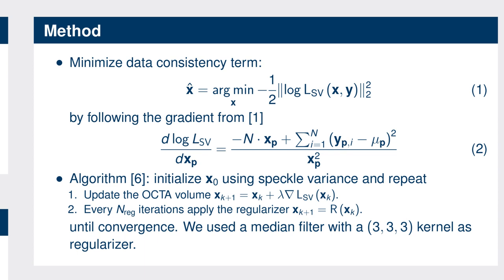The reconstruction fundamentally works by minimizing the data consistency term in Equation 1. X-hat is the less noisy OCTA volume that we want to reconstruct, which minimizes the data consistency term. Y are the structural OCT data acquired during a scan. We try to maximize the probability by finding an OCT volume X given our structural OCT data Y. L is a likelihood function for speckle variance derived previously by Stefan Plona and others. Equation 2 shows the log-likelihood derived from an angiography volume X. The gradient is computed at each voxel position P of the volume; N is the number of scan repeats — 5 in our case — and Y denotes the structural OCT data. Mu is the mean of all Y's at position P. This gradient allows us to minimize the data consistency term.